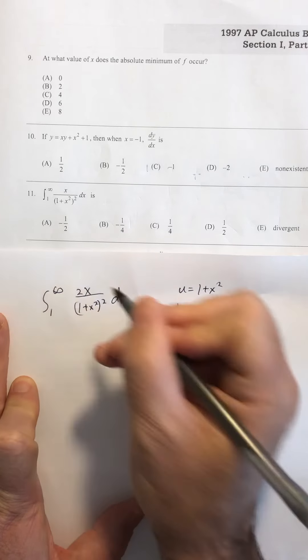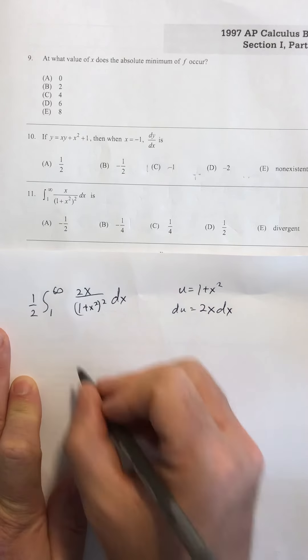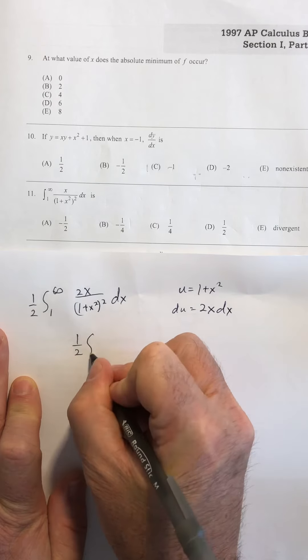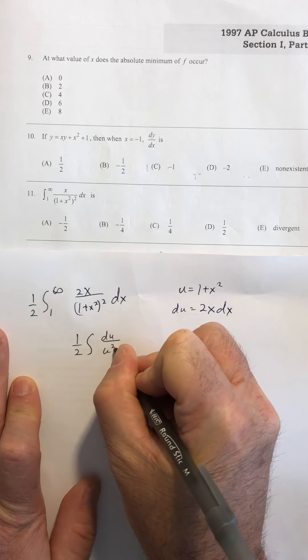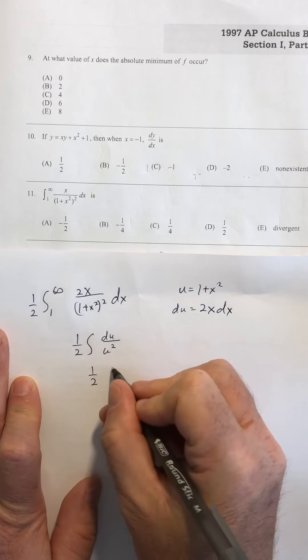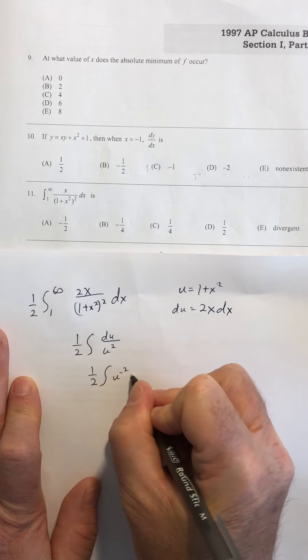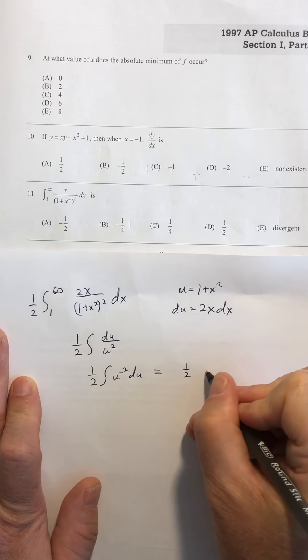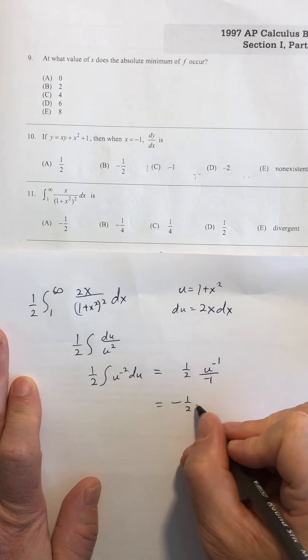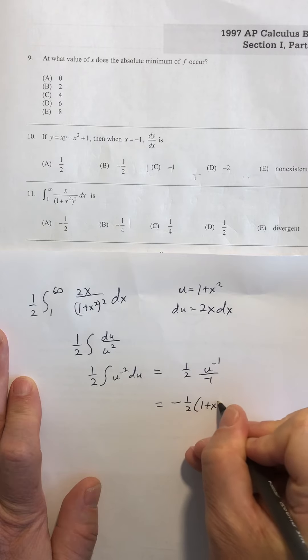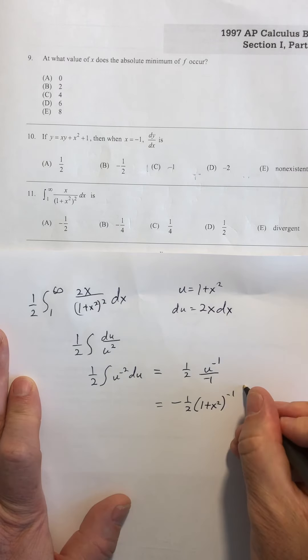I don't have a 2 there, so I'm going to put a 2 and a 1 half out in front. This becomes 1 half the integral of du over u squared, and that's going to be 1 half the integral of u to the negative 2 du. That gives me 1 half u to the negative 1 over negative 1. So I have negative 1 half u, which is 1 plus x squared to the negative 1st, and I'm evaluating that from 1 to infinity.